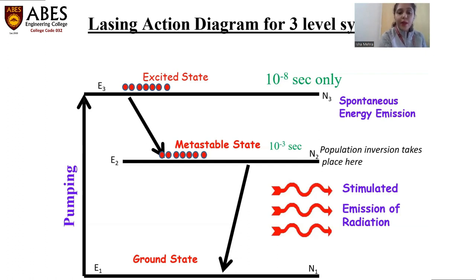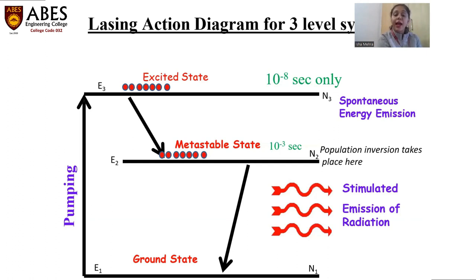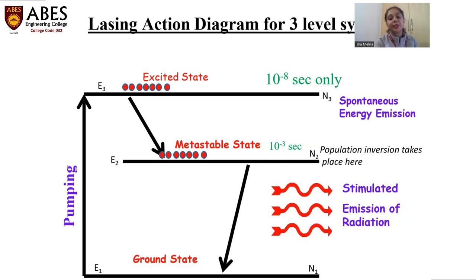When the atom is in the second state, we call it the metastable state, because the atoms reside there for a longer period of time — that is 10⁻³ seconds. The atoms have time to collect themselves, and once the condition for population inversion is achieved, the atoms suddenly drop down, resulting in a very beautiful coherent beam through stimulated emission of radiation.